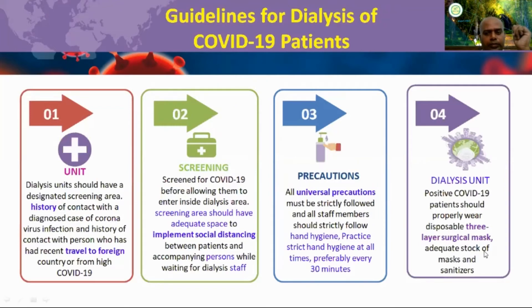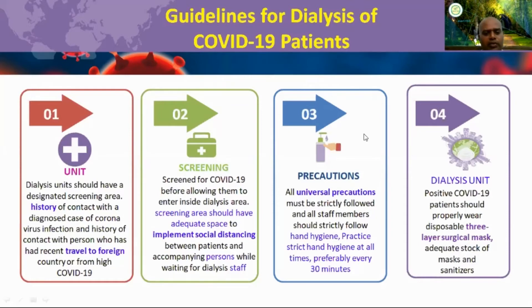The dialysis unit should be designed with COVID-19 precautions. First, inquire whether the patient has traveled to foreign countries or any infected area. Screening should be done first, and social distancing should be maintained to avoid unnecessary exposure. A proper screening area should be in place with adequate infection prevention measures. All initial precautions must be strictly followed as per government norms. Hand hygiene is very important — wash hands frequently.